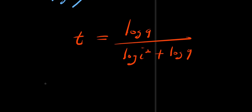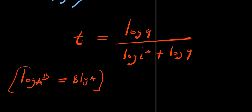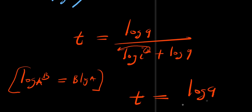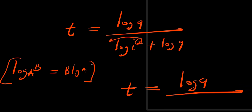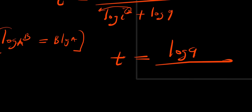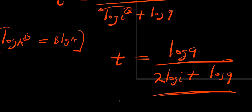Now, applying the power rule — log(a^b) equals b times log(a) — the exponent 2 in log(i²) comes down in front, giving 2·log(i). So our final answer is t equals log(9) divided by (2·log(i) + log(9)). This is the answer using the second method.